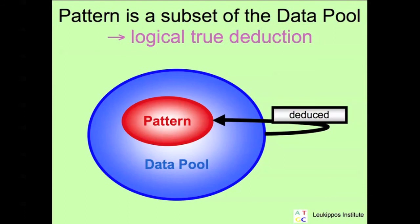Basically, the pattern is a subset of the data pool. This means that the pattern is deduced from the data pool. Deduction is a logical true method since it concludes from general to special.